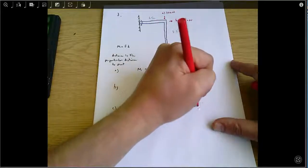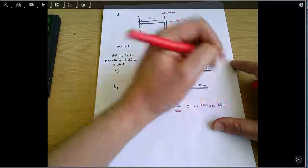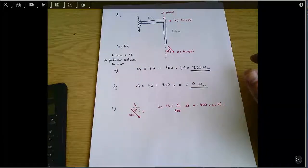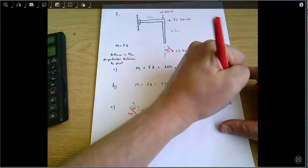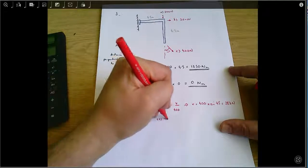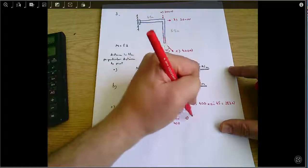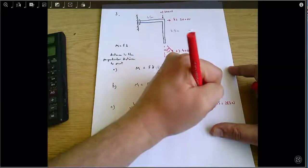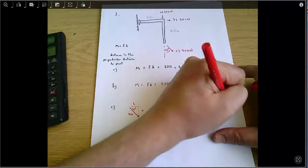So V equals 400 times sine 45, which equals 283 Newtons, and cos 45 equals H over 400. So H equals 400 times cos 45, and that's also going to be 283 Newtons.